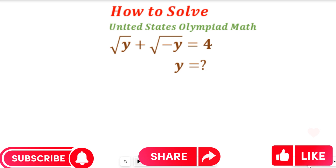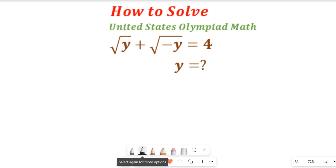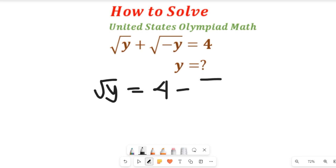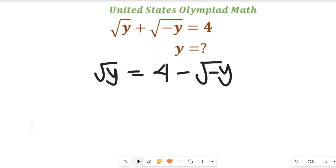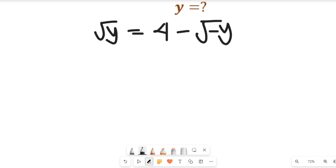To solve this question, the first thing we should do is take the negative square root of y to the right-hand side. We do this in order to make the right-hand side a perfect square so we can use the algebraic formula. Doing that, our equation becomes: square root of y equals 4 minus the negative square root of y. So we subtracted the negative square root of y from both sides.